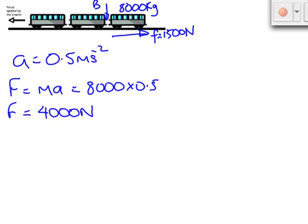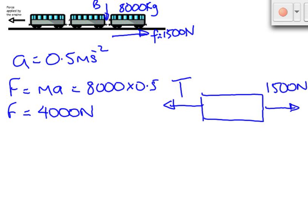If we were to look at the forces acting on that last carriage in a free body diagram, we'd be able to identify two forces. First of all, there's the resistive force, 1,500 newtons, that's opposing the motion. But pulling the carriage forward, we have the tension in link B. Let's call that T for now.